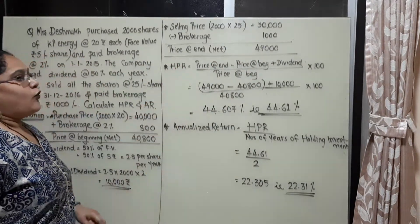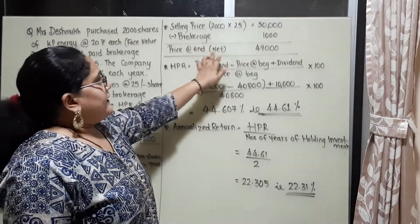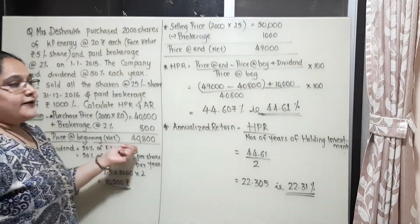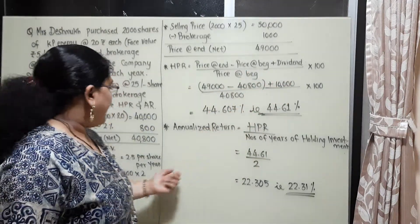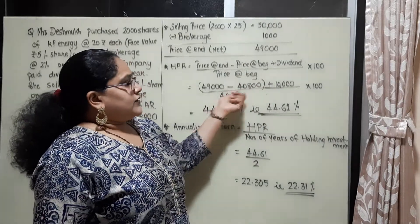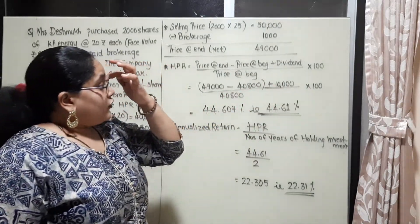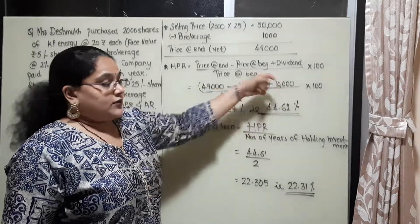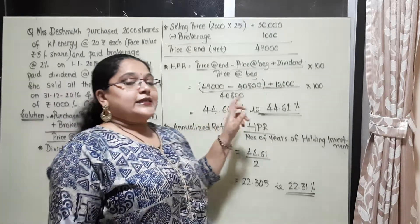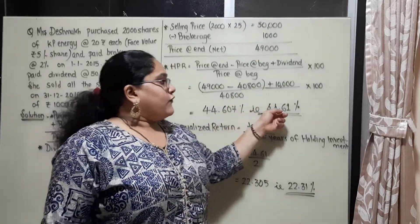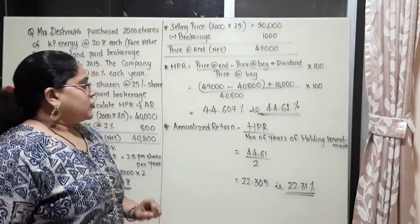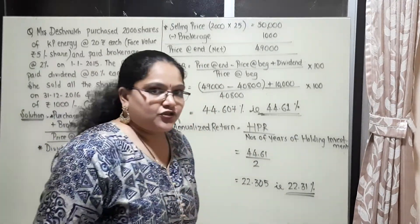Now how do we calculate the holding period return? Same formula: price at the end (49,000) minus price at the beginning (40,800) plus dividend (10,000), divided by price at the beginning (40,800) into 100. You will get 44.607, that is 44.61% as her total return for the holding period.